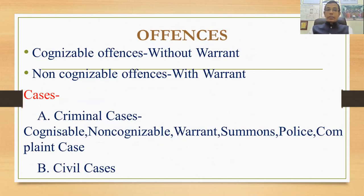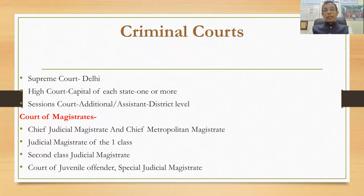There are two types of offenses: cognizable and non-cognizable. Criminal cases include cognizable, non-cognizable, warrant cases, summons cases, police cases, complaint cases, and civil cases. Different types of courts include the Supreme Court, High Court, Sessions Court, Chief Judicial Magistrate Court, Judicial Magistrate of First Class, Second Class Judicial Magistrate, and Court of Juvenile Magistrate.